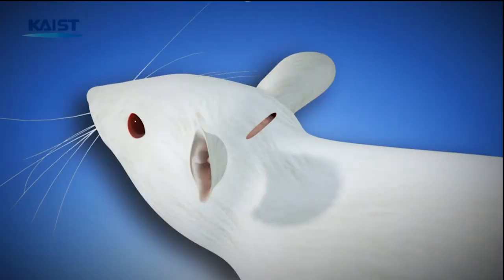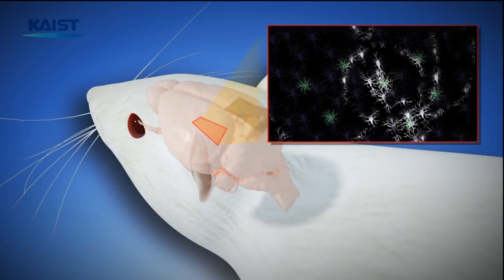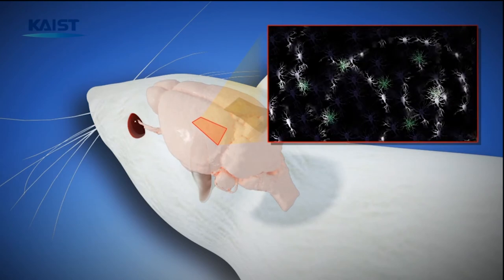In addition, flexible micro LEDs inserted in an animal's brain activate the light-sensitive neurons through optogenetics for two-dimensional cortical stimulation.